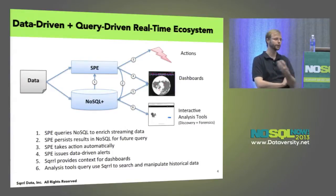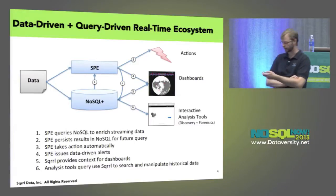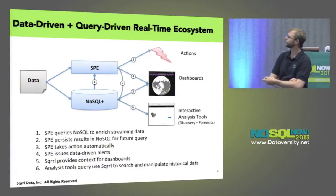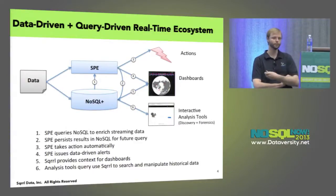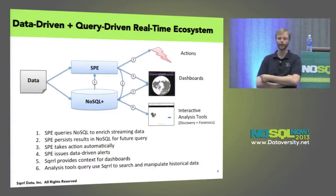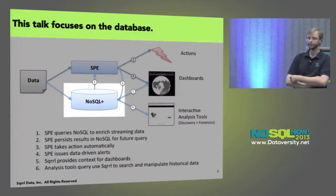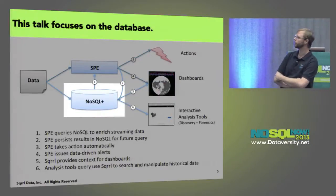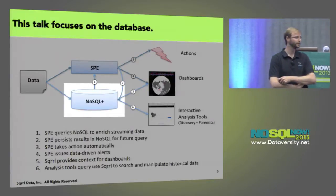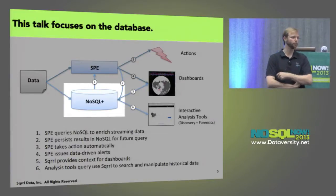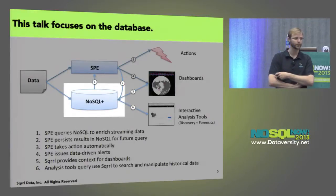All of these things flow into the human interaction — or it could actually be an automated analytic on the right-hand side. In this particular talk, we're not going to focus on the whole space. We're really going to focus in on that NoSQL part, and in particular Accumulo and Squirrel as an implementation that supports really all of these types of interaction.